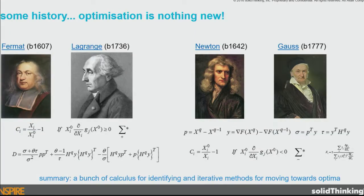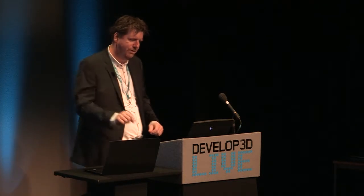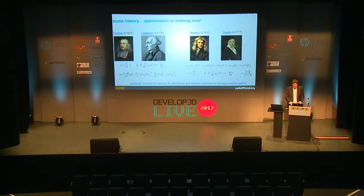A little history. I come very much from the practical angle — working optimisation, not a mathematician. But optimisation is nothing new. There were a few guys that were quite good at mathematics a few hundred years ago and sort of laid the foundations. To summarise: it's really just a bunch of calculus for identifying and iterative methods for moving towards the peak. How do I get up that hill, and how do I know when I've got there and not just some little local peak? That's what the maths has to do.